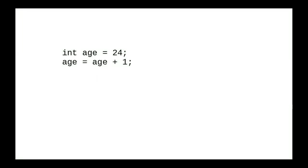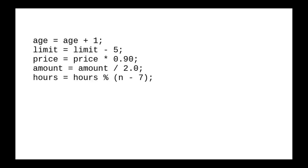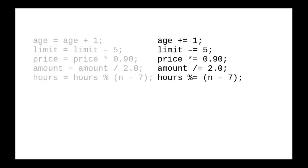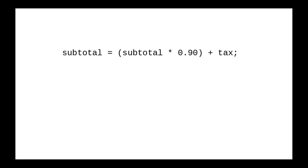Earlier, we talked about expressions of the form 'variable = variable + 1' being very common. In general, updating variables is quite common in Java programs. Whenever you have this pattern — where a variable is updated by an arithmetic operation — you can use an augmented assignment operator. For example: age += 1 is the same as age = age + 1; limit -= 5 is the same as limit = limit - 5, and so on. If you don't have a simple update, then you can't use the augmented assignment.